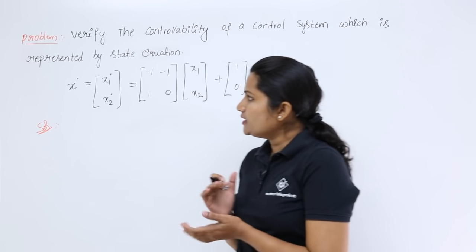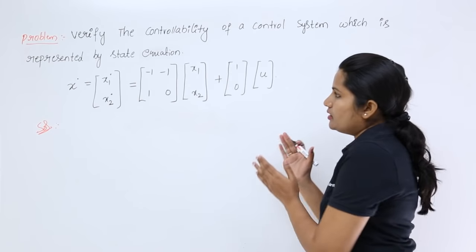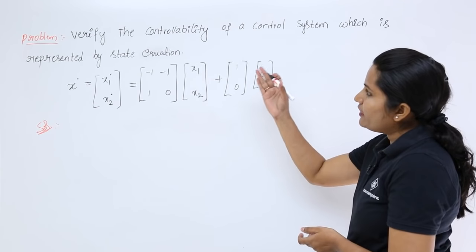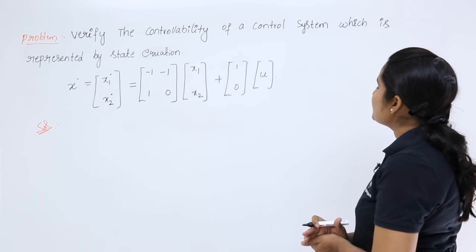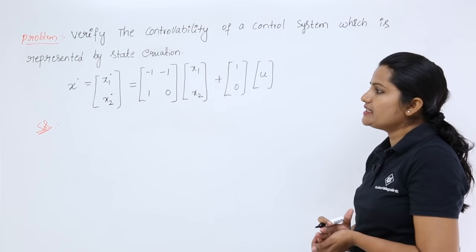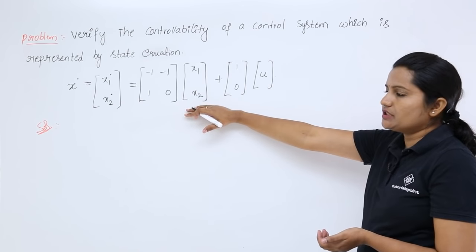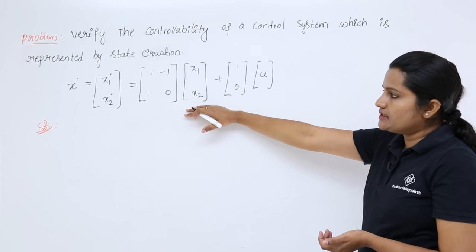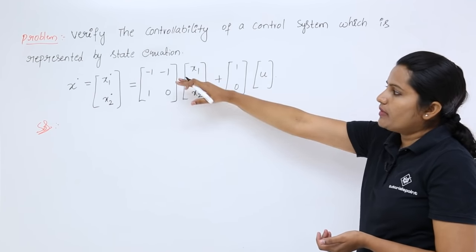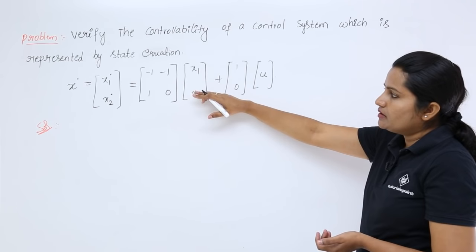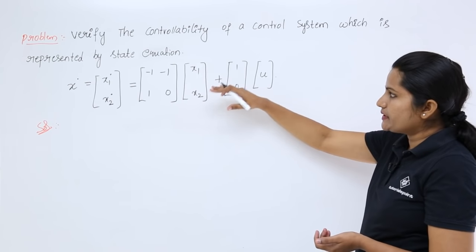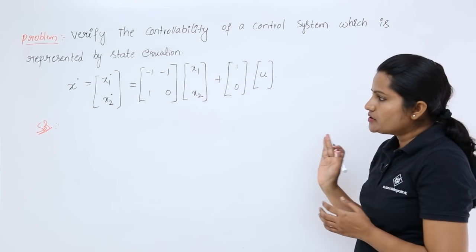Observe the problem: Verify the controllability of a control system which is represented by the state equation. x-dot is equivalent to the matrix [-1, -1; 1, 0] times [x1; x2] plus [1; 0] times u.